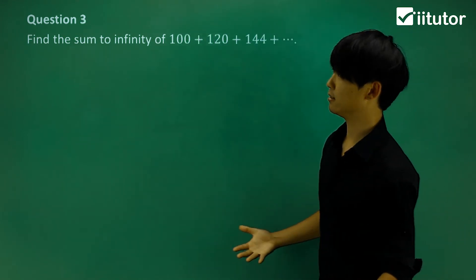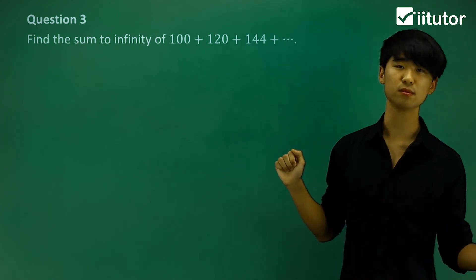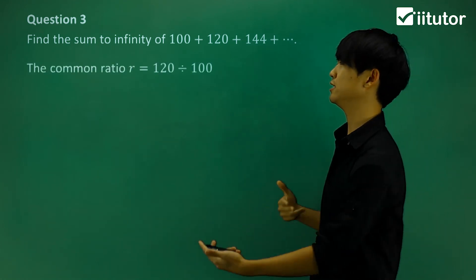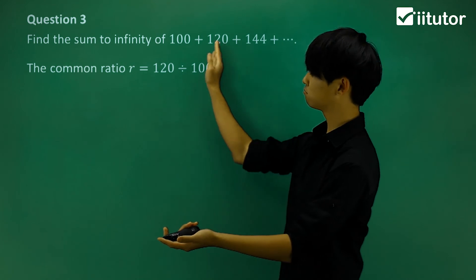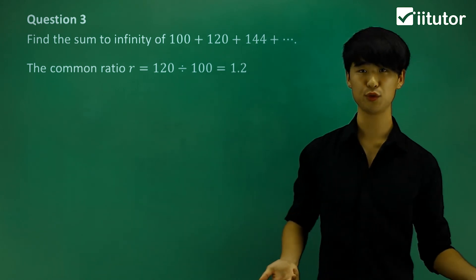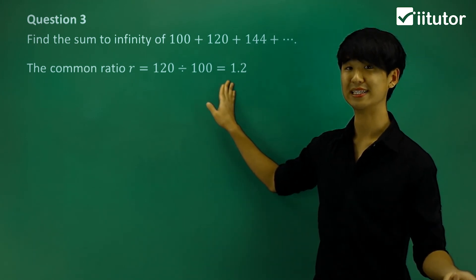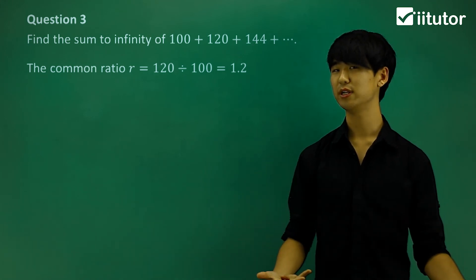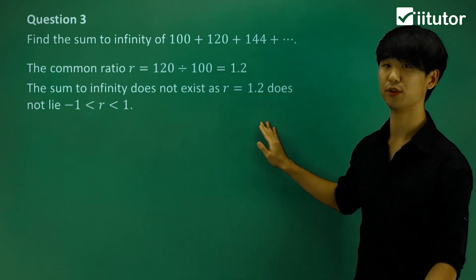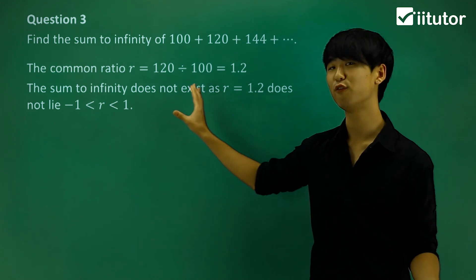Let's take a look at question 3. Question 3 amplifies what I said: find the sum to infinity of 100 plus 120 plus 144 and so on, in a geometric series. The first thing I'm going to do is find my common ratio — just take a term and divide it by the one right before it. I get a common ratio of 1.2. But if my common ratio is 1.2, meaning it's outside of the range of negative 1 and 1, then we shouldn't have a limiting sum for this question. So the sum to infinity does not exist, as r equals 1.2 does not lie between negative 1 and 1. That's the theoretical understanding we need to have for limiting sums.